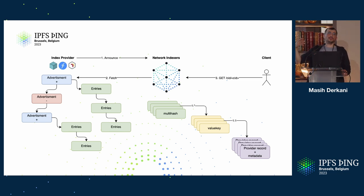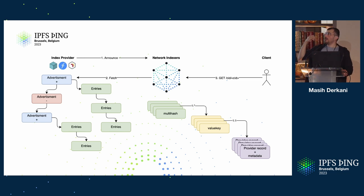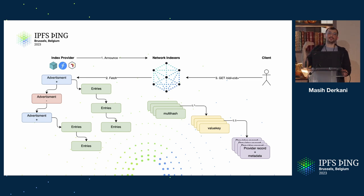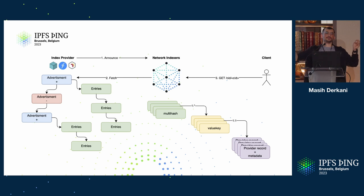There is a mechanism called extended providers which allows you to have a cluster of nodes providing the same information — typical of a large-scale content provider. You can convey through advertisements that all previously published content is now served by multiple nodes without republishing all the multihashes. All you're saying is: please extend the addresses by which this content can be retrieved by these extra nodes. So far, this is probably as efficient as you can get when it comes to advertising content.